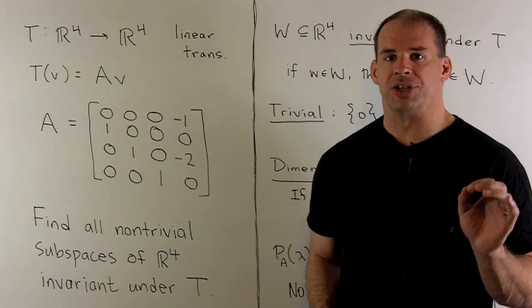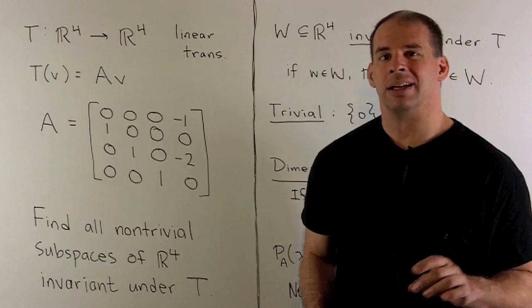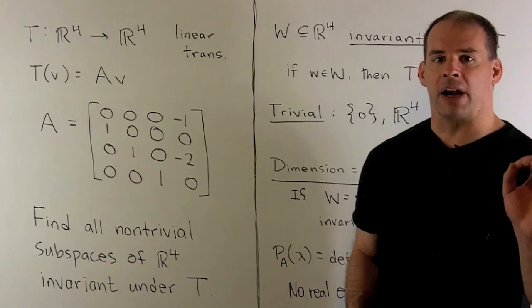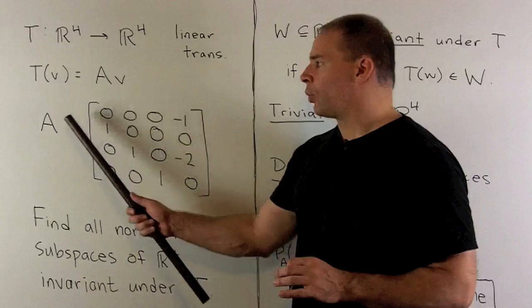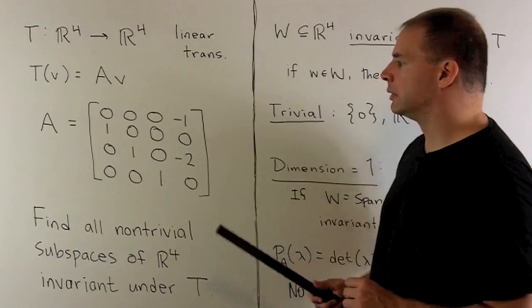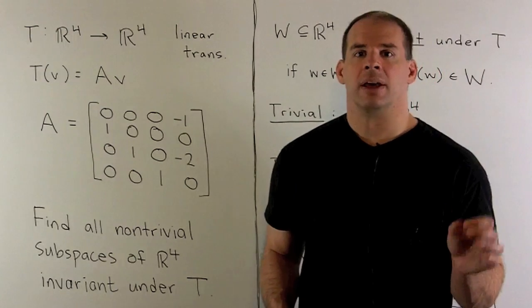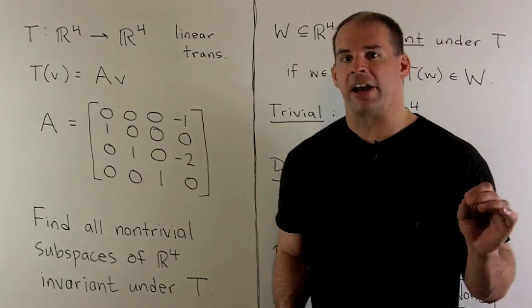Consider the following linear transformation T from R⁴ to R⁴. T is defined on the vector V as A times V, where A is the real 4 by 4 matrix given as follows. The question: find all non-trivial subspaces of R⁴ that are invariant under T.